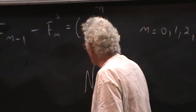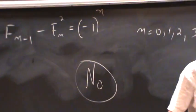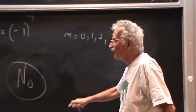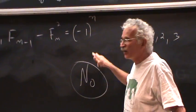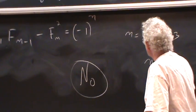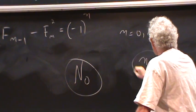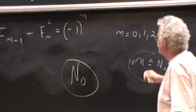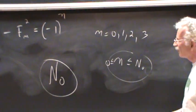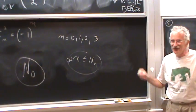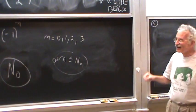And there are a lot of other examples where checking finitely many cases is a rigorous proof. I call it the n-zero principle. You can a priori determine a number n-zero depending on the problem, such that if you check it for all the integers between zero and n-zero, then it constitutes a completely rigorous proof.